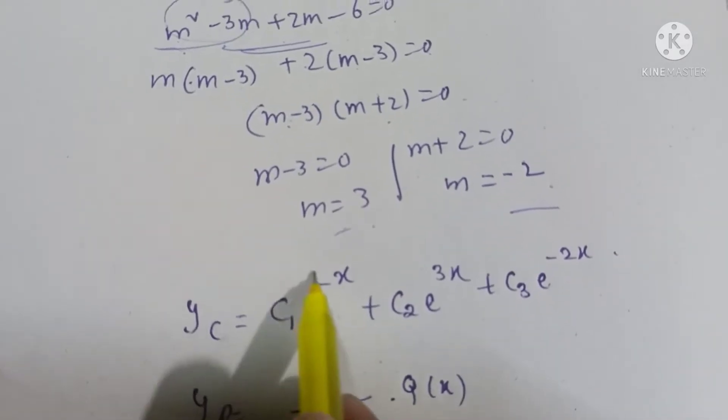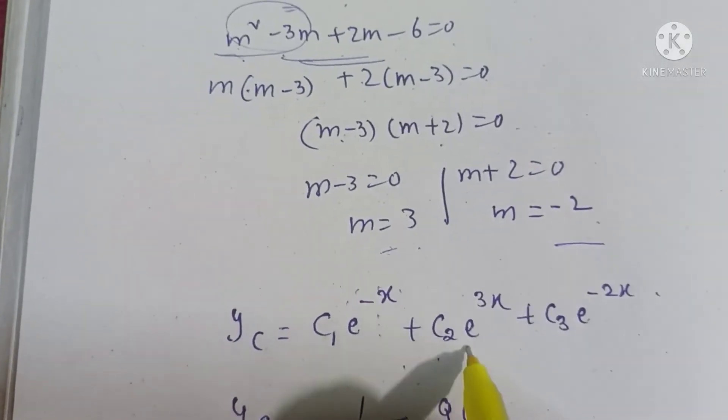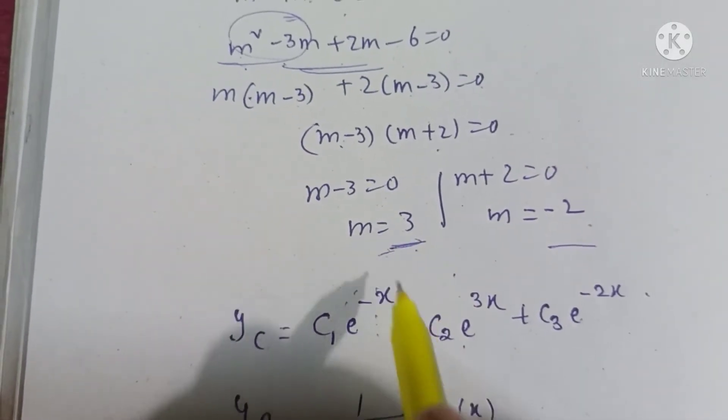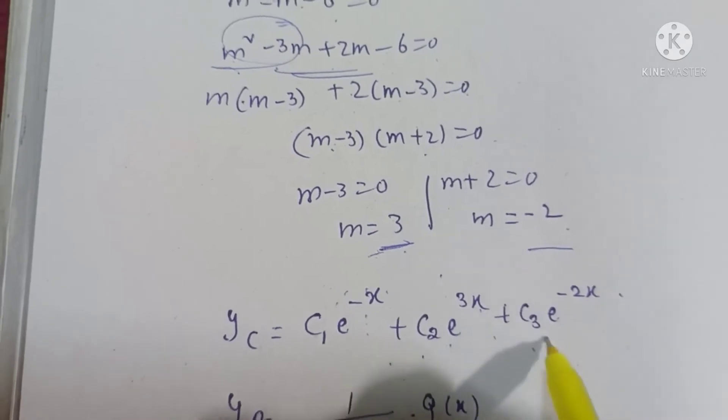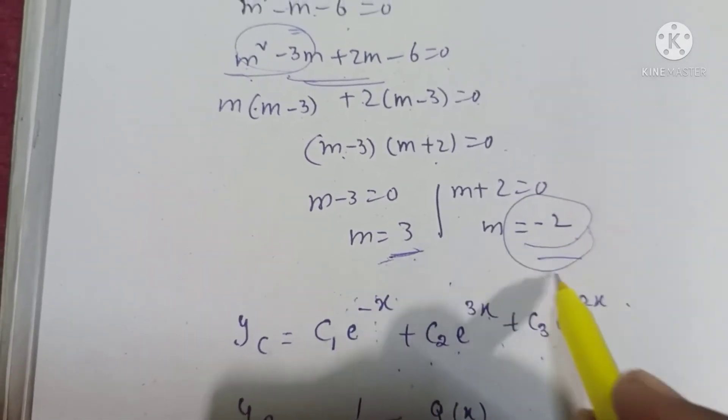Using the formula for real different roots: yc = c₁e^(m₁x) where m₁ = -1, so c₁e^(-x) + c₂e^(m₂x) where m₂ = 3, so c₂e^(3x) + c₃e^(m₃x) where m₃ = -2, giving c₃e^(-2x).